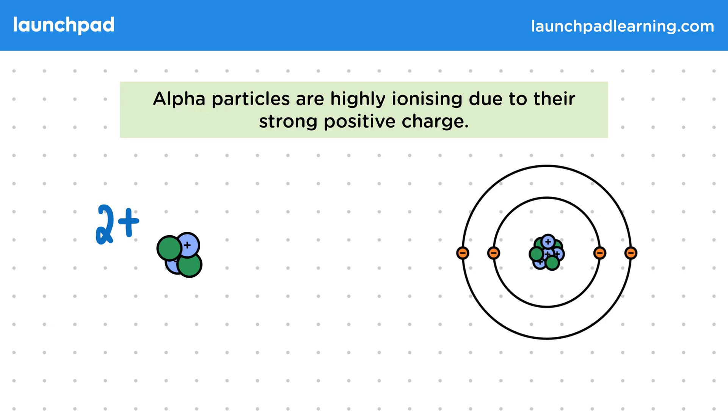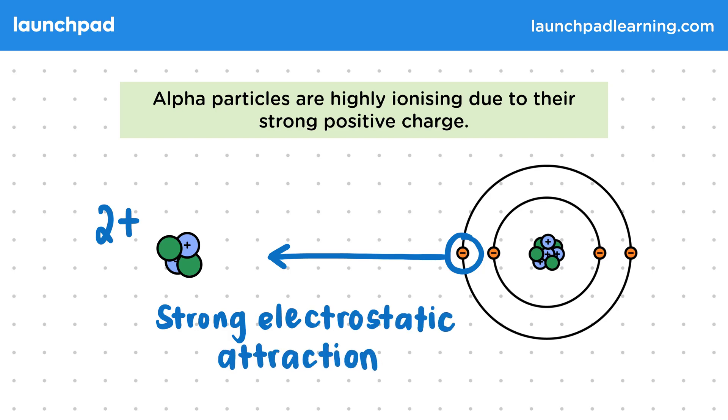Then in an atom, we have a positive nucleus surrounded by negative electrons. Normally the electrons are kept in the atom because they're attracted to the nucleus. But when the positive alpha particle gets close to the atom, one of the outer shell electrons will be pulled towards it. This is because of the strong electrostatic attraction from their opposing charges.